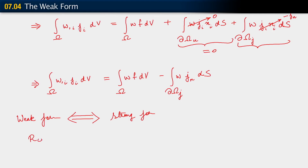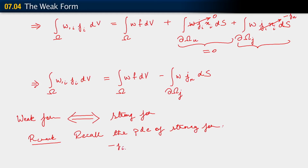Before ending this segment, I want to recall the physical interpretation of the PDE of the strong form. Recall: minus j_i comma i equals f in omega, or in direct notation, minus del dot j equals f in omega. The divergence of a vector is the total net outflux over a little volume, so the negative divergence is the net influx into that little volume.